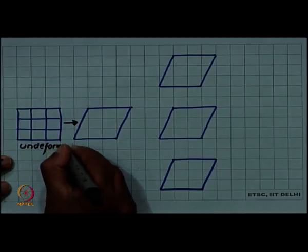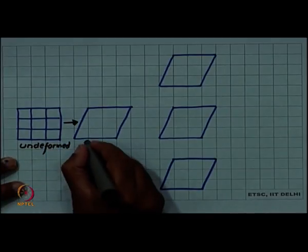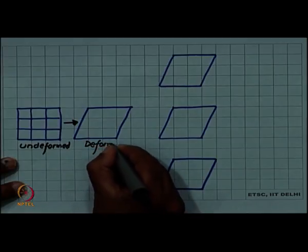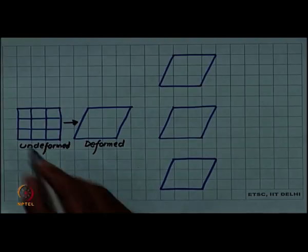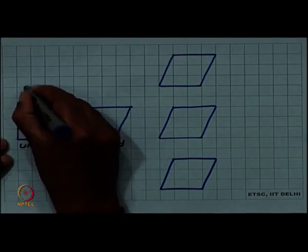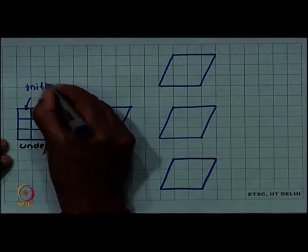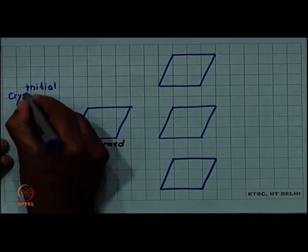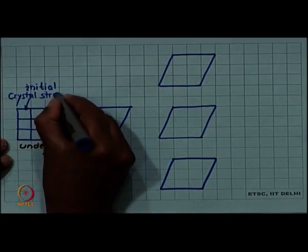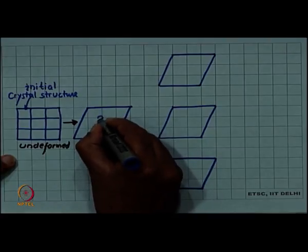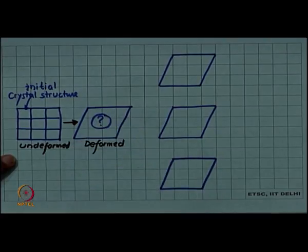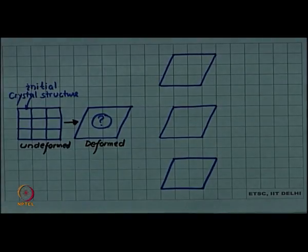This is undeformed and now it is going to be deformed. Suppose it is deformed now, the question which we are asking: what happened to the crystal structure? It had some initial crystal structure before deformation. The question is what is the final crystal structure or is it crystalline at all?